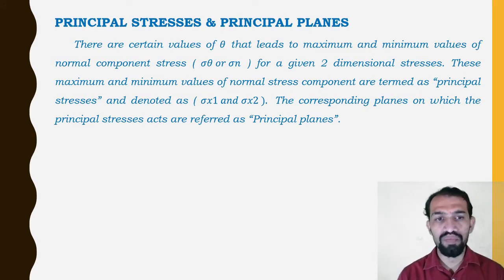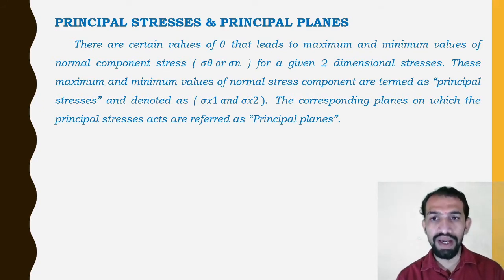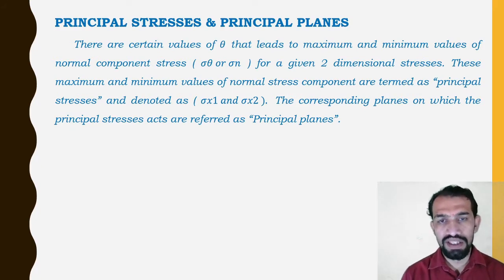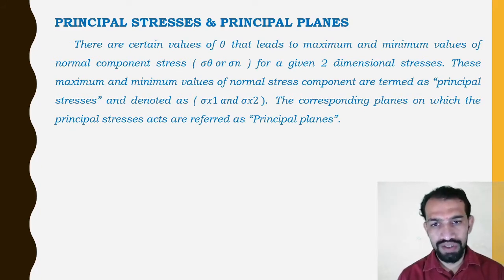So the minimum and maximum values, if we have an angle theta, are denoted as sigma x1 and sigma x2.